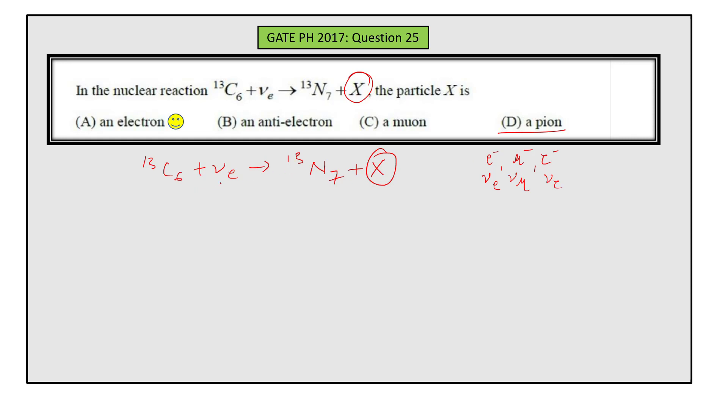So here we have electron neutrino which has lepton number equals to one on the left hand side. And you know lepton number is a fundamental quantity that needs to be conserved. So on the right hand side you should also have some particle which has lepton number equals to plus one.